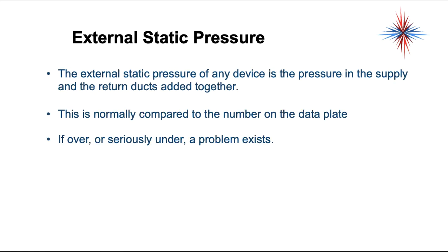Total external static pressure of any device is the pressure in the supply and return ducts added together. In your supply duct you have a positive pressure; in your return duct you have a negative pressure. Take the absolute value — drop the signs — and add the two numbers together. This total external static pressure is compared to the number on the data plate. If it's over or seriously under, a problem exists.